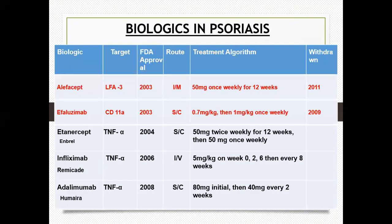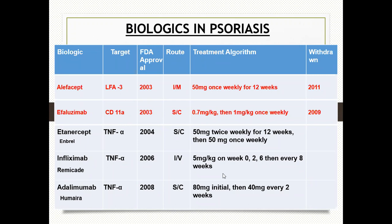There are two drugs — alefacept and efalizumab — which were withdrawn in 2011 and 2009 respectively. Etanercept, infliximab, and adalimumab are still being used and are more effective in psoriasis with arthritis. These drugs have different doses; just remember that they are all injectable. You don't need to remember the exact doses.